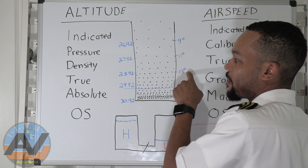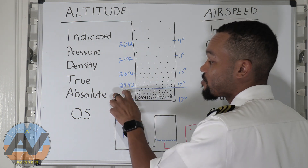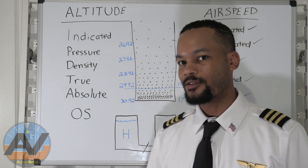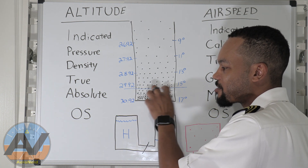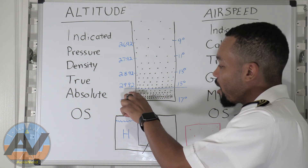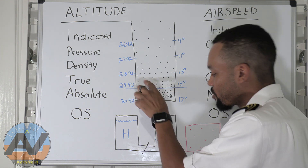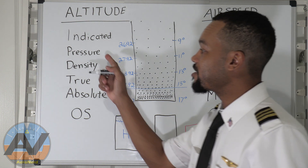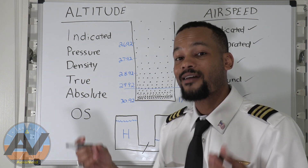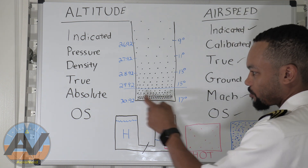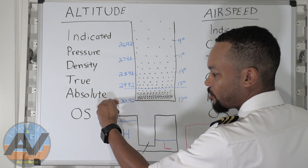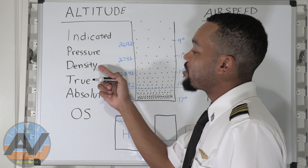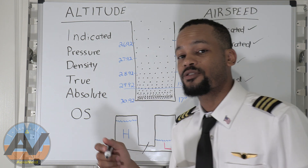Now what happens if the temperature changes? Let's say it is 29.92, but the temperature is not 15 — it's a super hot day, like 33 degrees Celsius. Is it really going to perform as if it's at the standard datum plane? No — the air molecules are going to be much more spread out. Density altitude is pressure altitude corrected for non-standard temperatures.